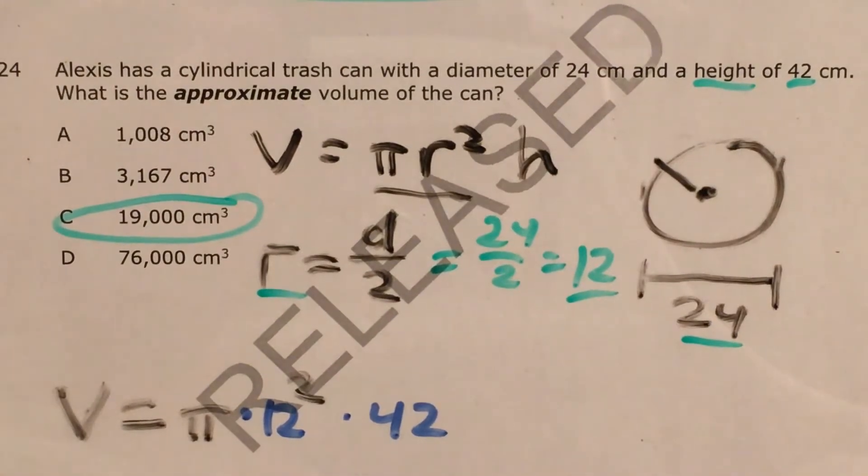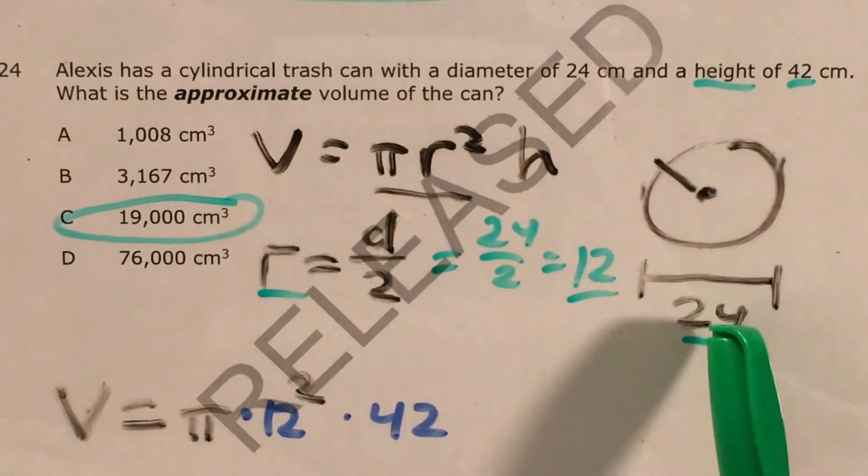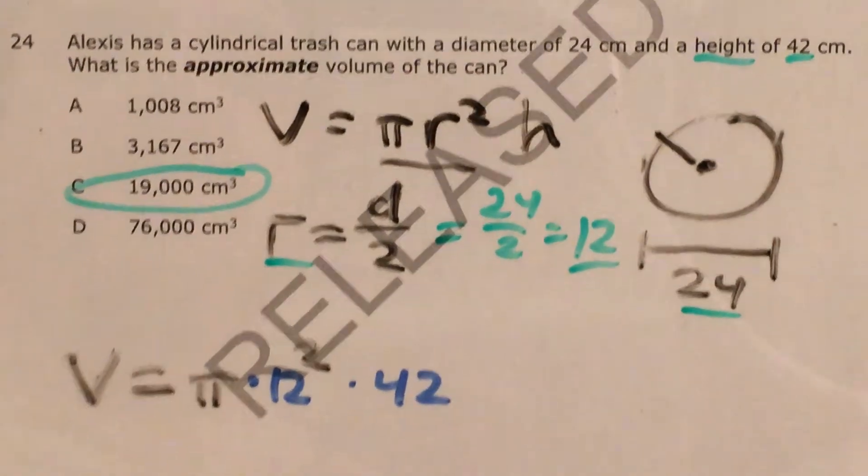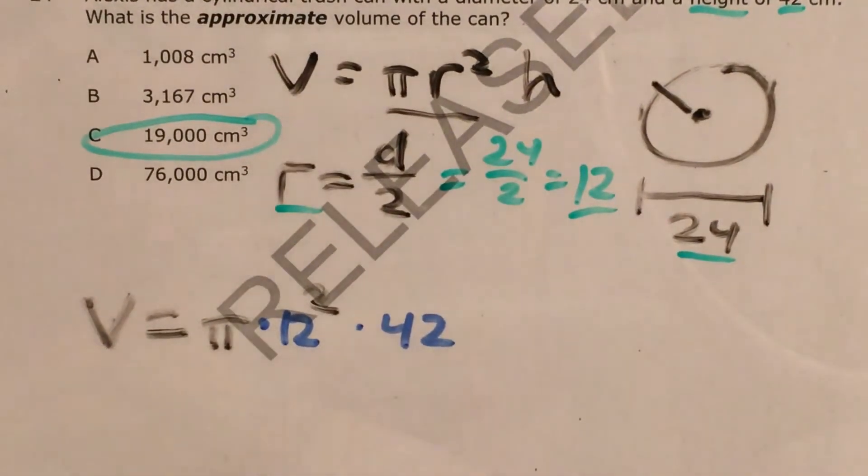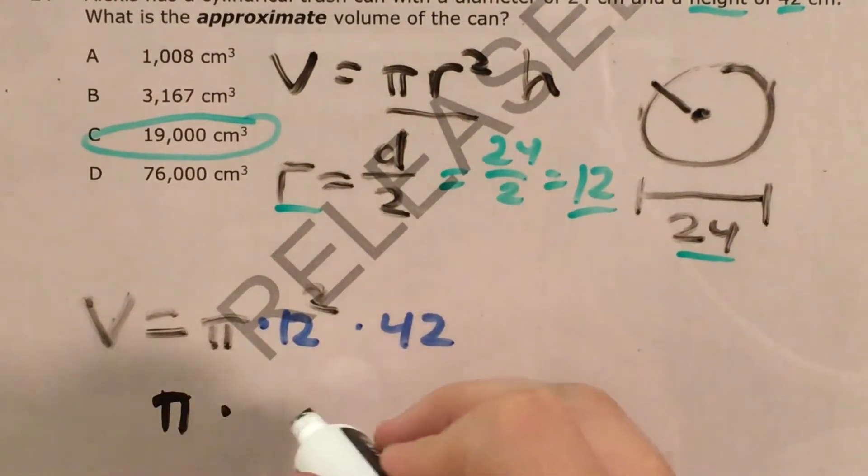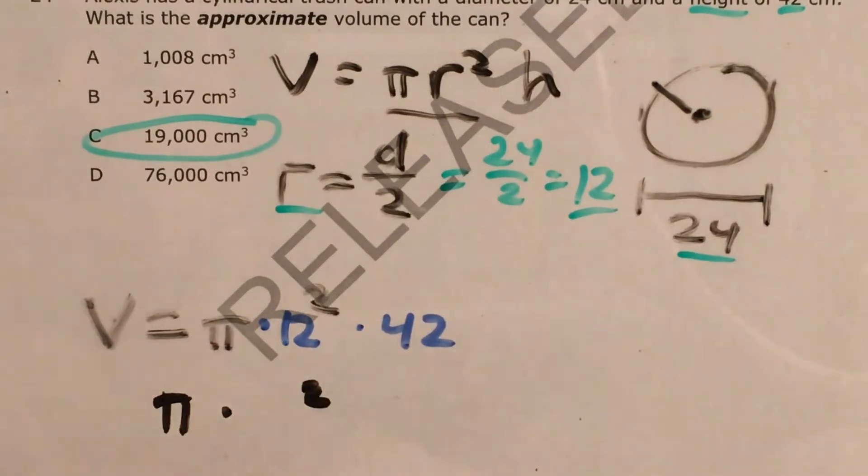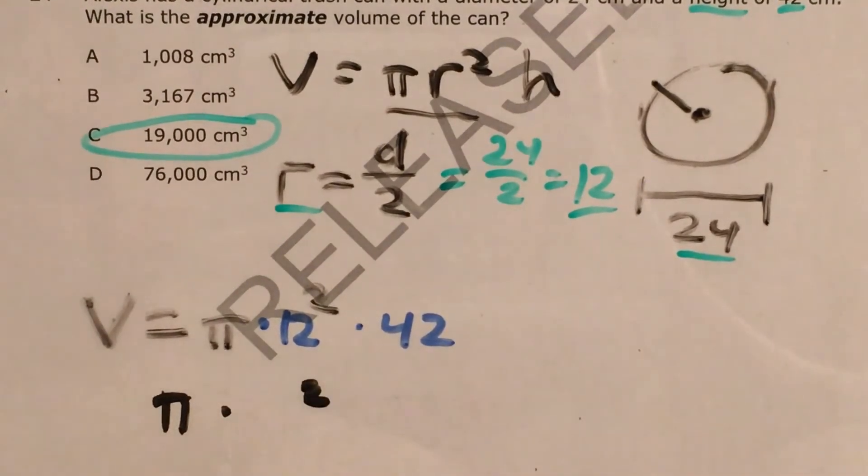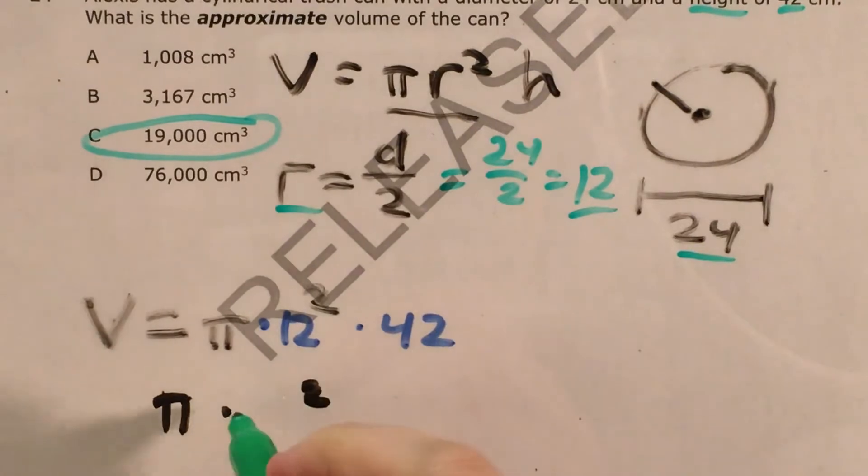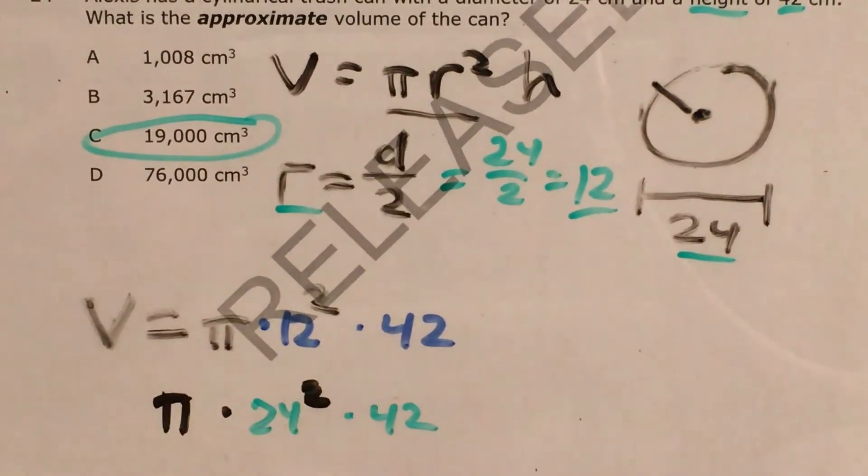Now I do want to go over the trick answer, because what if I forgot that this was the diameter and not the radius, and I plugged it into my formula and tried to find pi times 24 squared times 42, where I wrote 24 in for my radius without actually remembering that it's my diameter.